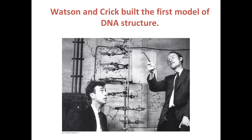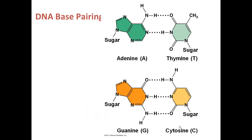This is the model that they built of the structure of DNA. In the DNA, as we've already described, there is base pairing. Adenine always bonds with thymine and guanine always bonds with cytosine. This matches Chargaff's rules because the amount of A was always equal to the amount of T, and the amount of G was always equal to the amount of C. These base pairs are connected by hydrogen bonds — 2 in the case of adenine and thymine, and 3 in the case of guanine and cytosine.